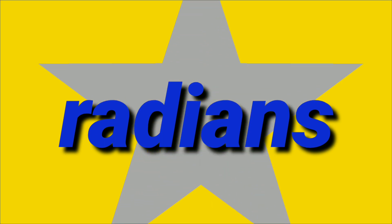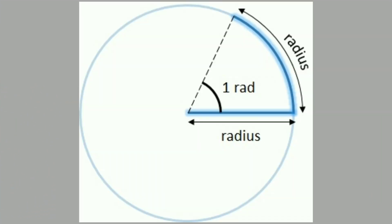What is radian? First, one radian is defined as the angle subtended at the center of a circle by an arc whose length equals the radius of the circle.